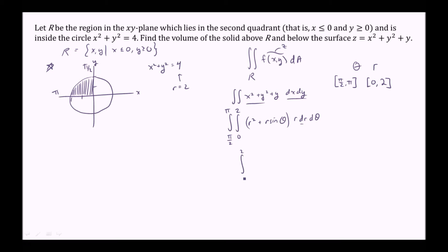So what we'll first do is just take the inner integral by itself, multiplying in the r, the extra r, to get r cubed plus r squared sin theta dr. So this integral gives us r to the 4th over 4, plus r cubed over 3 sin theta, with the bounds 2, 0.